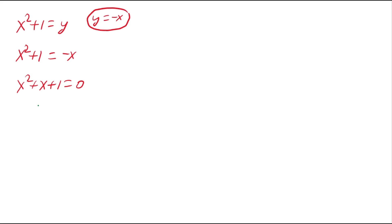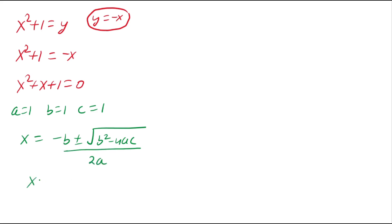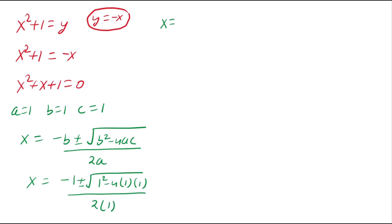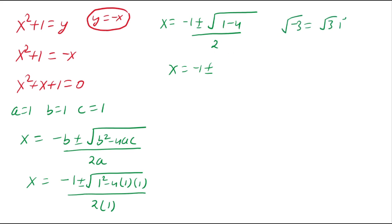This is a quadratic equation with a = 1, b = 1, c = 1. Applying the quadratic formula x = (-b ± √(b² - 4ac)) / 2a gives x = (-1 ± √(1 - 4)) / 2 = (-1 ± √(-3)) / 2 = (-1 ± i√3) / 2. These are two imaginary solutions.